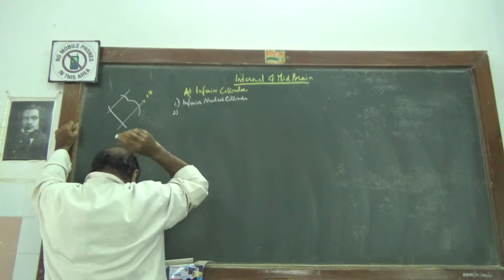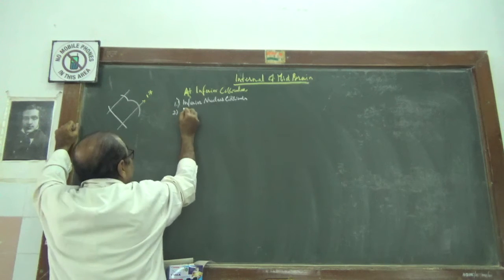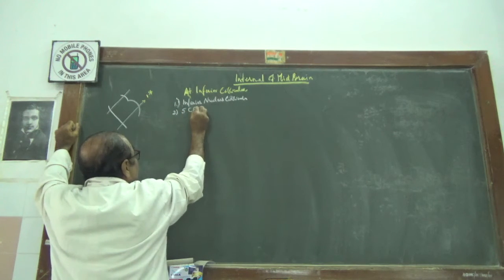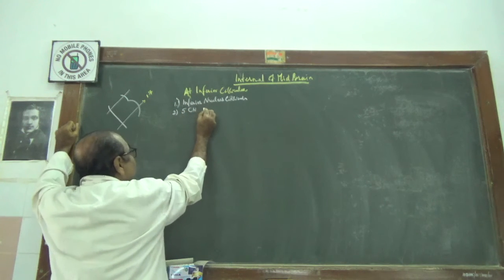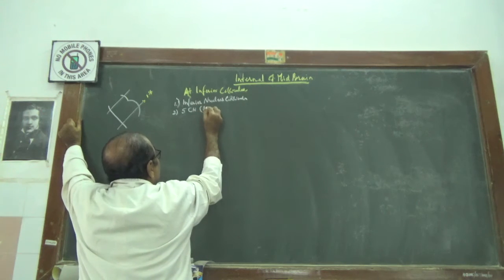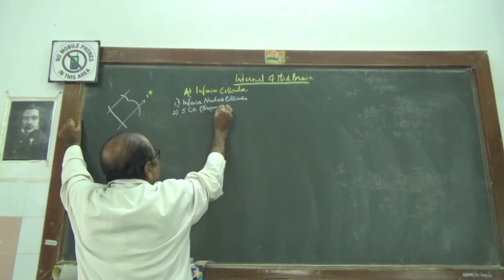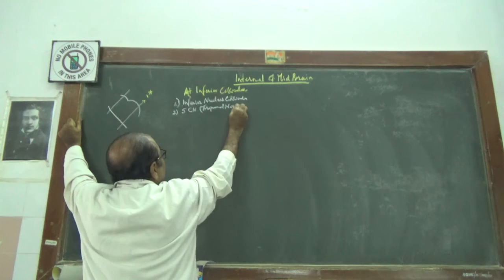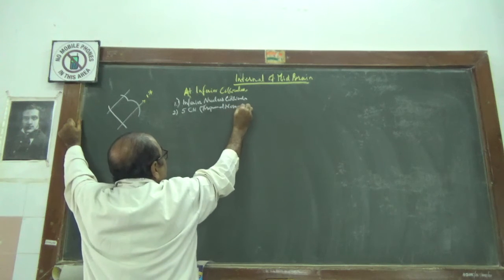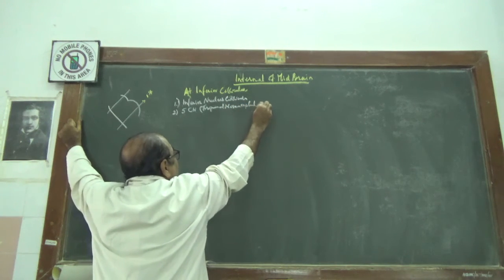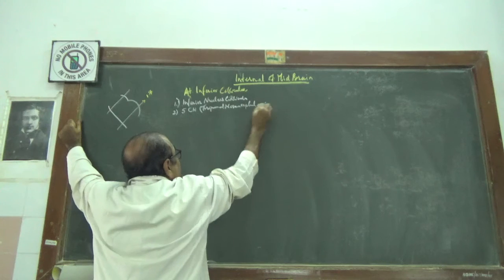Second: fifth cranial nerve — that is the trigeminal — mesencephalic nucleus.